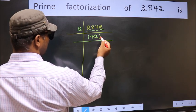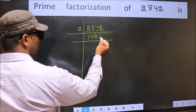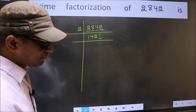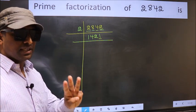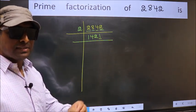Now the last digit 1, not even, so this is not divisible by 2. Next prime number 3. To check divisibility by 3...